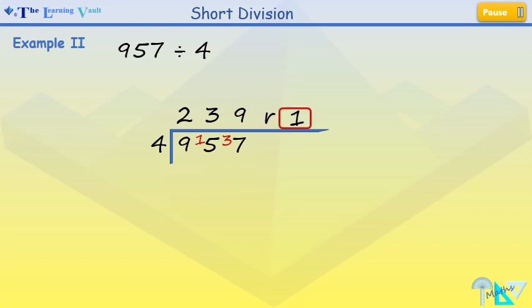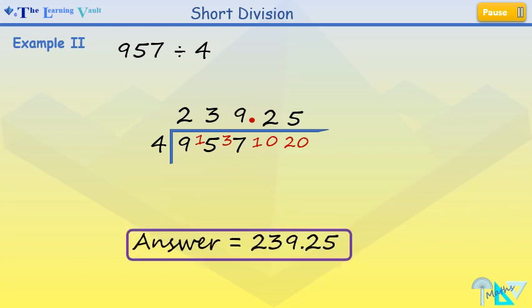Remember, we'll bring the remainder down and place it right there. And then we'll add our decimal point. Now, don't forget to add a 0 next to the 1. This becomes 10. Now, 10 divided by 4 equals 2. We have a remainder of 2. We add another 0 to the 2. This becomes 20. 20 divided by 4 equals 5. No further remainder. So, our answer is 239.25.